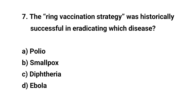Question number 7. The ring vaccination strategy was historically successful in eradicating which disease? The right answer is C: Smallpox.